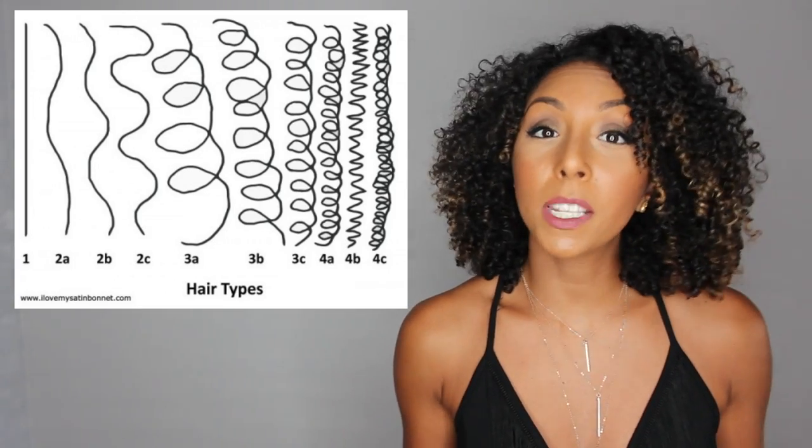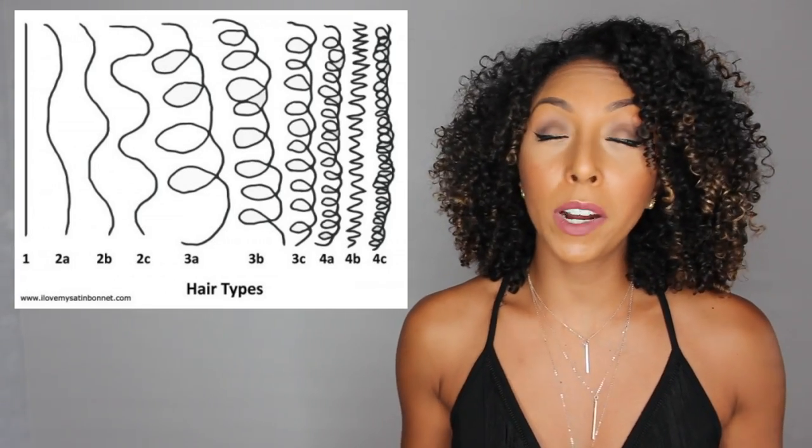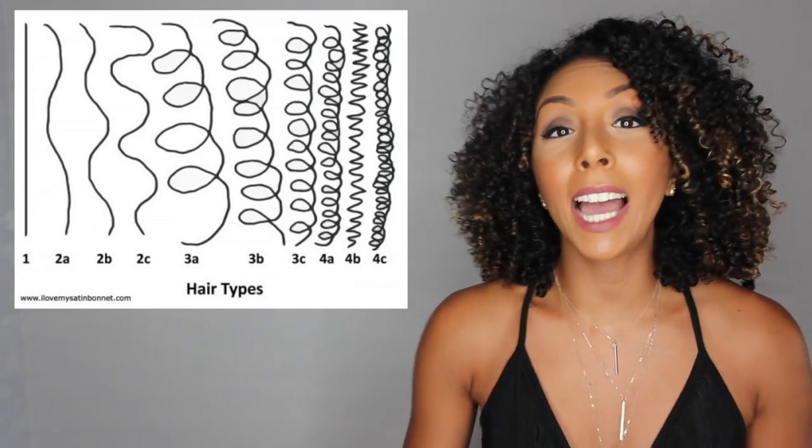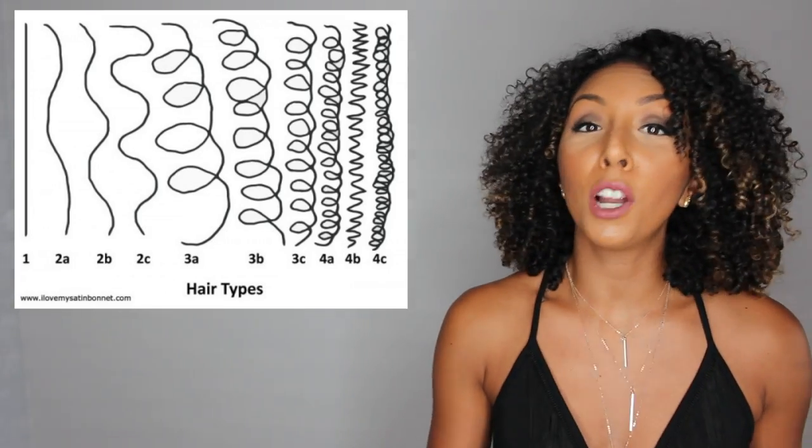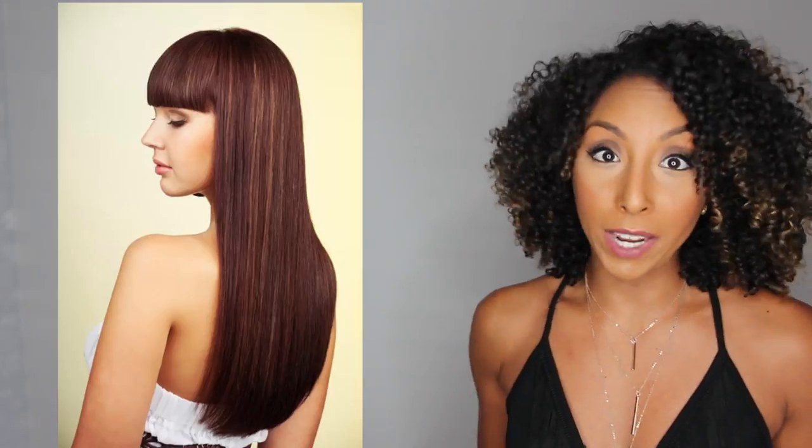Before I start off with the types of curls, I do want to mention that type one hair would be straight hair. So if your hair is just completely straight — no curl, no waves, just completely straight down — you would have type one hair.